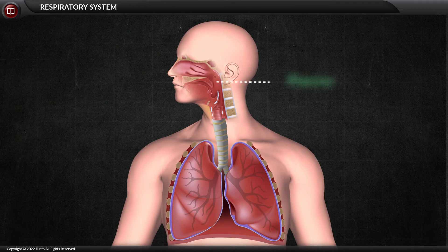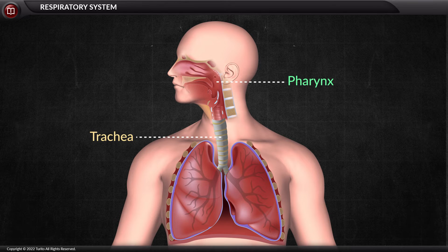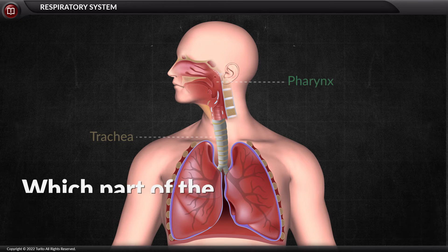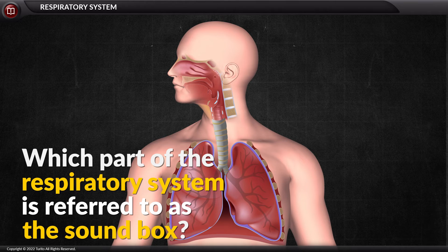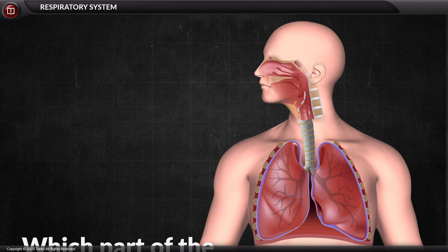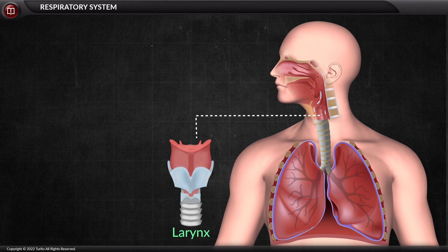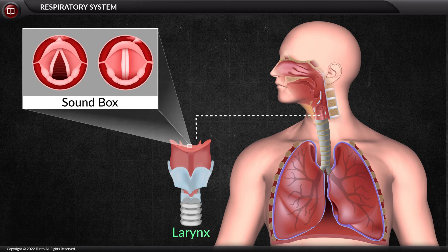The next part is the pharynx, opened by the internal nares, and air passes through the pharynx to the windpipe or trachea. A structure called the larynx is present above the trachea, which hosts the vocal cords and helps in the production of sound with the movement of air — it is called the sound box.